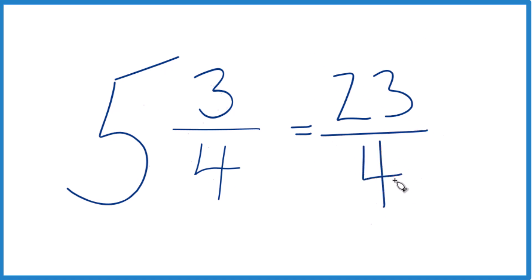23 fourths, that's the same thing as 5 and 3 fourths. They have the same value, we're just representing this a little differently here as an improper fraction.